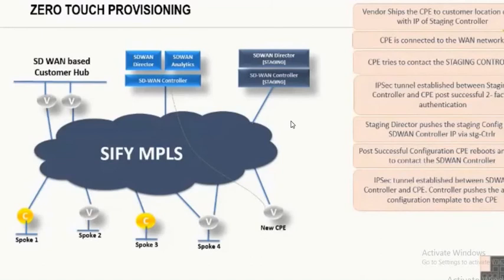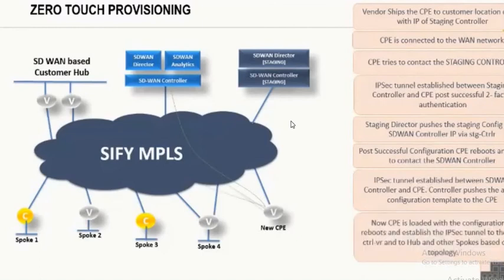Once approved, the staging controller notifies the staging Director and provides the production controller's IP address. The CPE gets the config, reboots, comes back up, contacts the production controller, establishes an IPsec tunnel, and downloads the post-staging configuration. The CPE router is now talking to its own organization's controller — previously it was talking to the CPE provider organization. The branch is now available on the network, knows how to reach overlay locations, forms point-to-multipoint IPsec with the Versa branches and remote branches, and data forwarding starts flowing.